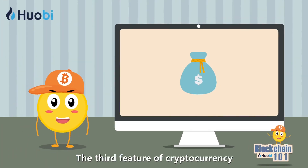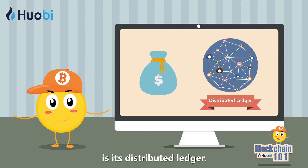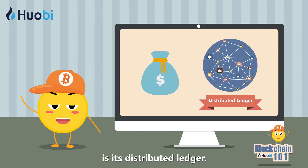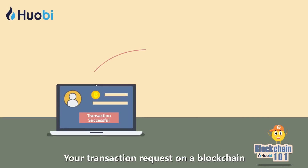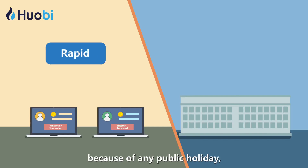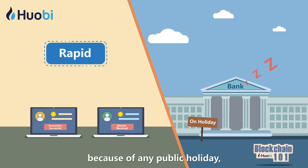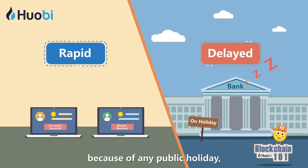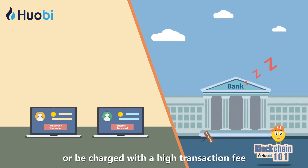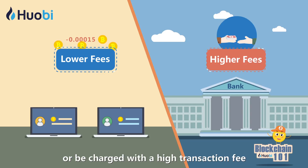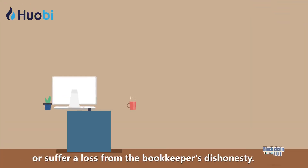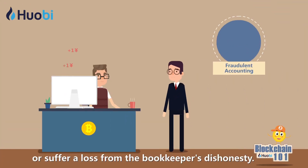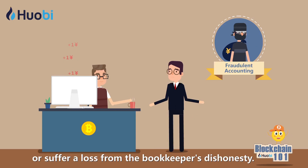The third feature of cryptocurrency is its distributed ledger. Your transaction request on a blockchain will not be delayed because of any public holiday, or be charged with a high transaction fee due to the bookkeeper wanting to make a profit, or suffer a loss from the bookkeeper's dishonesty.